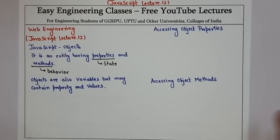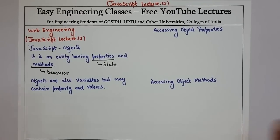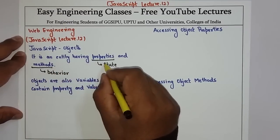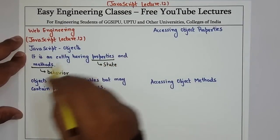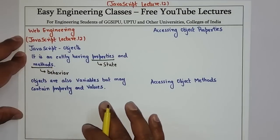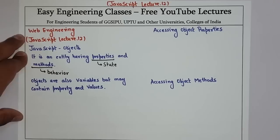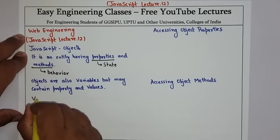Hello everyone, today in this web engineering lecture series we are going to study the 12th lecture on JavaScript, and the topic is JavaScript objects. Now as you might have studied objects in C++ and Java programming, JavaScript also supports objects. An object is an entity having properties and methods — properties means state and methods means behavior.